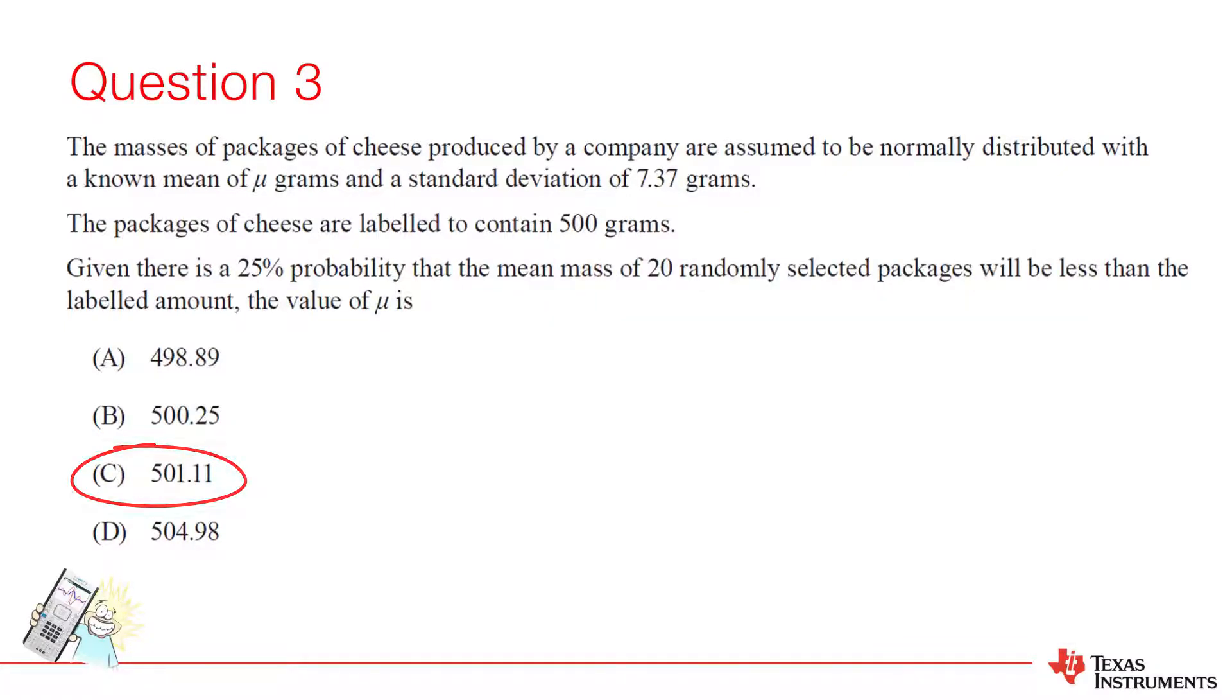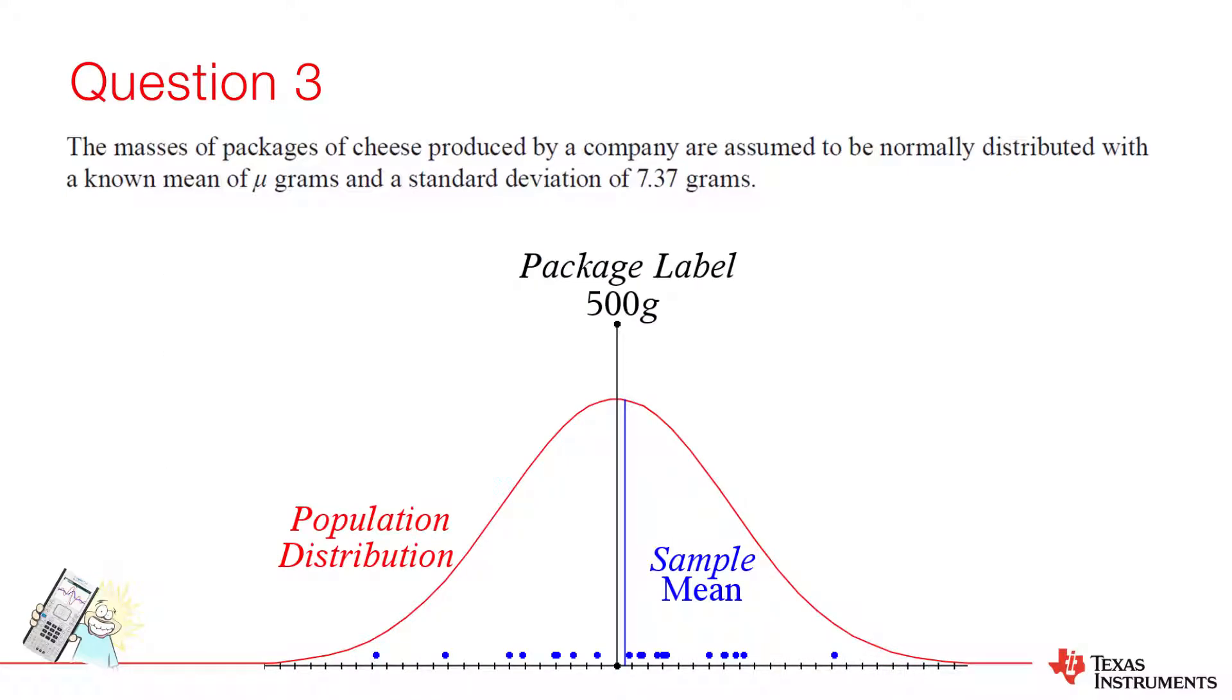Before we move on to the next question, let's take a moment to understand this result. The red graph shows the normal distribution with a mean of 500 and a standard deviation of 7.37. The blue dots are a random sample of 20 blocks of cheese taken from this distribution, and the blue line shows the mean of this sample. I'll generate a couple of samples. Notice that approximately half of these samples have a mean less than 500. Our problem states that only 25% of samples have a mean less than 500. So I'll increase the population mean to 501.